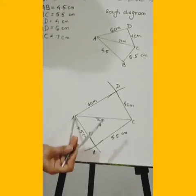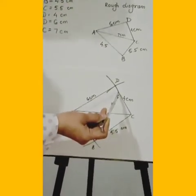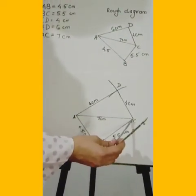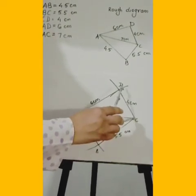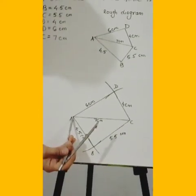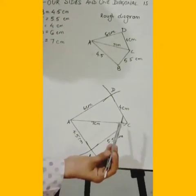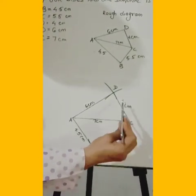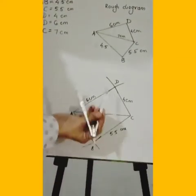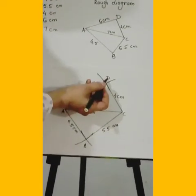With A as center, draw an arc of 6 cm. Then with C as center, draw an arc of 4 cm — the measurement of CD — so that it intersects the previous arc. We have drawn 6 cm from A and 4 cm from C, and the two arcs intersect. The point of intersection is point D. Mark this point immediately as point D.